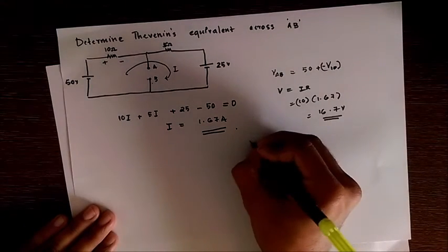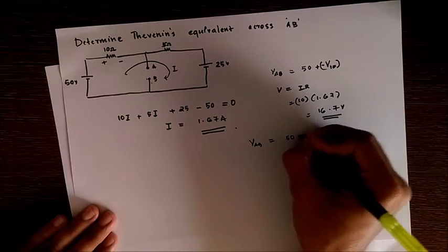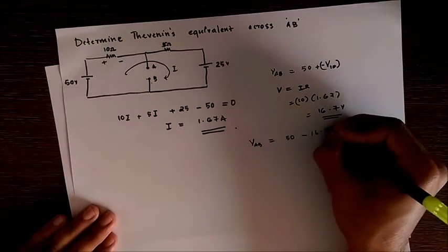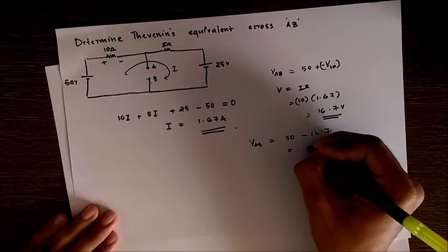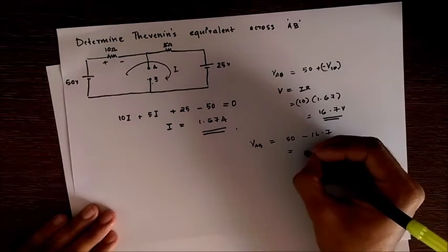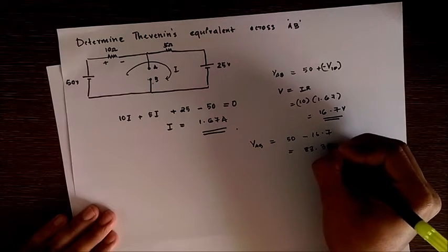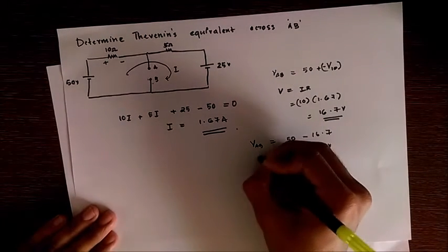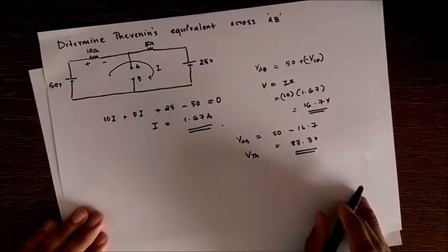Therefore our voltage VAB is given by 50 minus 16.7. As these are of opposing polarities we get the value VAB is 33.3 volts, which is also called the V-Thevenin of our equivalent circuit.